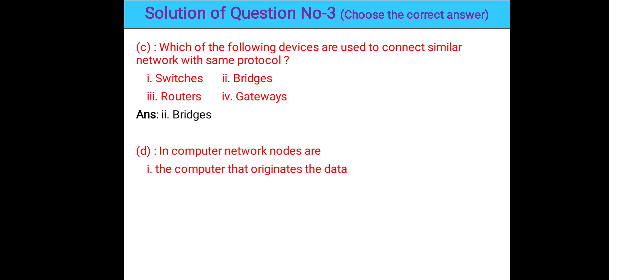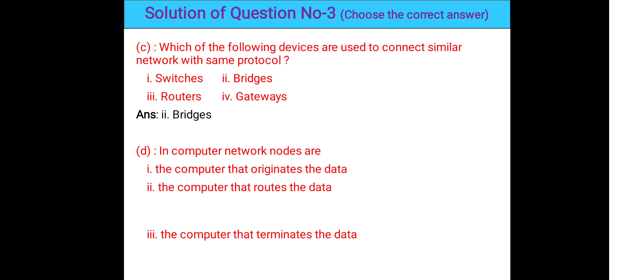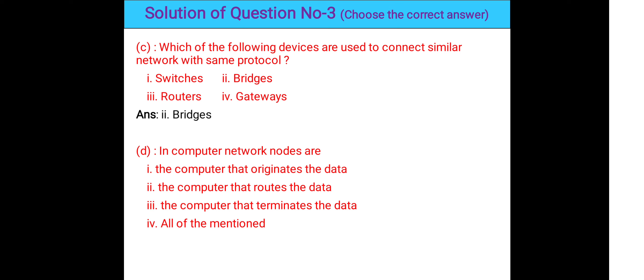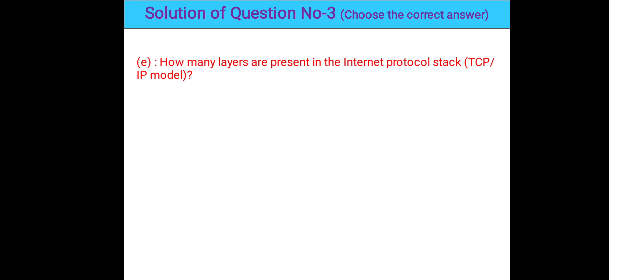Question 3d: In a computer network, nodes are computers that originate the data, route the data, or terminate the data — all of the mentioned. Option 3 is the correct answer because computers that terminate data are not performed in the nodes. Question 3e: How many layers are present in the TCP/IP model? The answer is 5 layers — option 1 is correct.